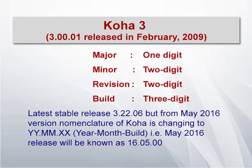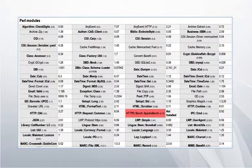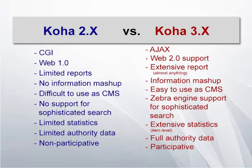The new versioning system — year.month.build — makes the numbering easier to understand: 16.05 means the May 2016 release. The About Koha tab during installation gives real-time server information and shows all 68 Perl modules needed to run Koha. The journey from Koha 2.x to 3.x brought technological differences: CGI shifted to AJAX, Web 1.0 to Web 2.0, limited reports to comprehensive reports, no mashup to full mashup, and Koha can now also be used as a content management system, with sophisticated search including fuzzy searching.